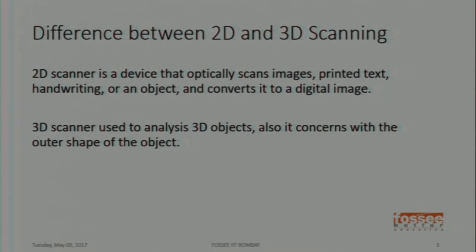Generally a 2D Scanner is just like a Xerox machine — you are scanning digital photographs or anything and keeping it in a JPEG format. That is just 2D. But a 3D scanner actually gives you the three-dimensional view of that object.